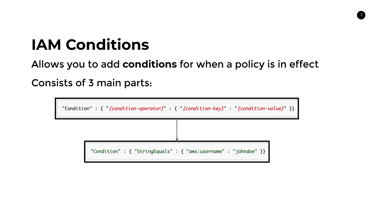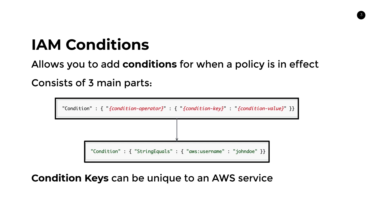Here's a real condition applied to a policy. The condition operator is string equals, and the condition key is AWS username — a global condition key accessible for all AWS accounts — saying the AWS username must equal John Doe. You can also do things like must contain 'John', so John Doe would also match. Condition keys can also be unique to specific AWS services, each with their own keys that allow you to achieve very interesting functionality.